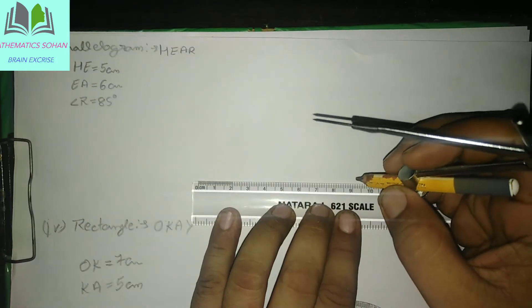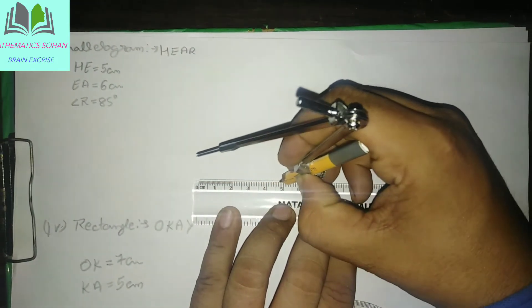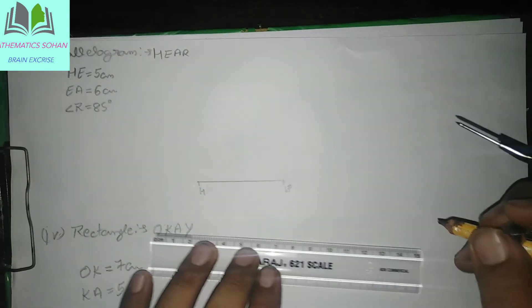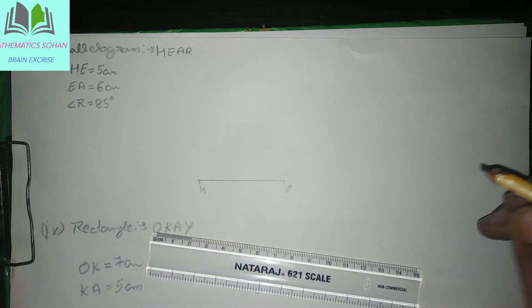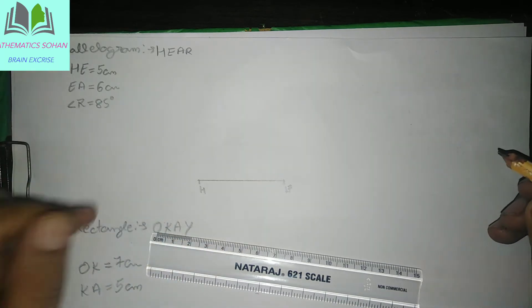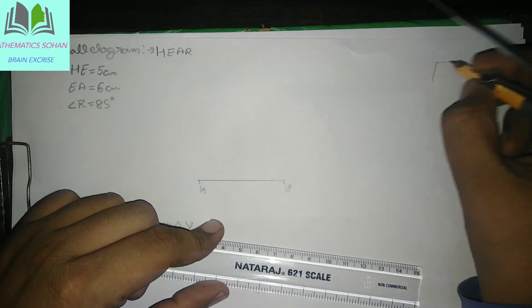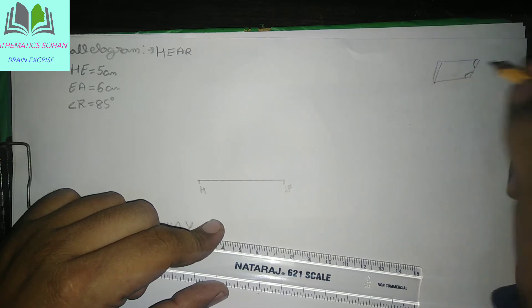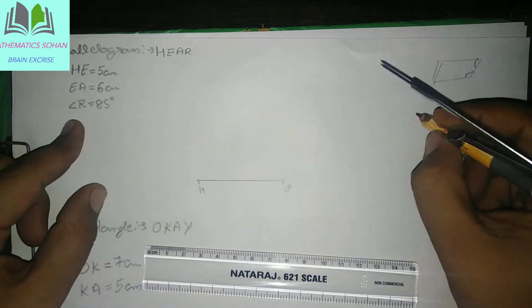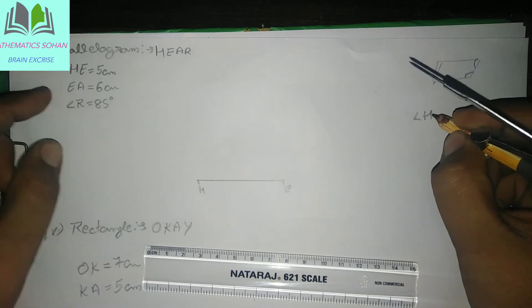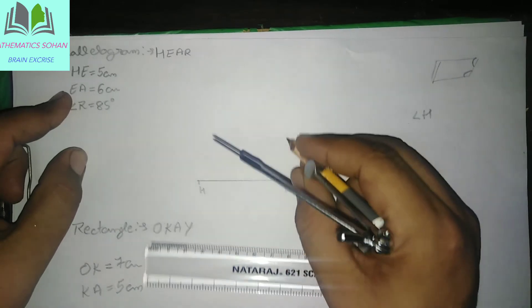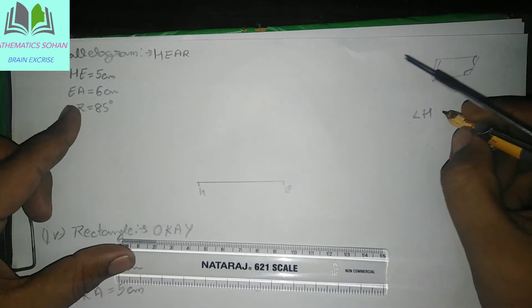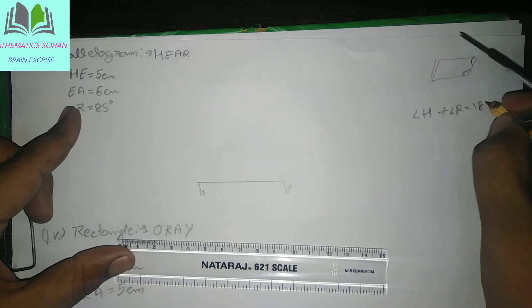I hope you understand. Number 3 mein hum first hi 5 cm draw kar lete hain — toh yahan se lekar yahan pe hamar 5 cm. H and E. Dekho ab humein kya chahiye — jo parallelogram mein adjacent angles ka sum hota hai woh 180 degree hota hai. Yani ki jaise hamare roughly parallelogram hai toh yahan pe jo yeh angle hai kitna hoga — 180 degree hoga. H ka angle humein nahi pata. Magar dekho — EA hamari side mein aayegi toh S ke saath angle H plus angle R kitna ho jayega: 180 degree.